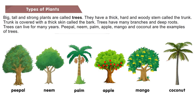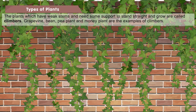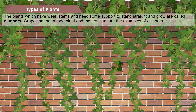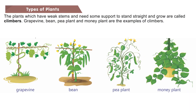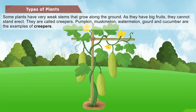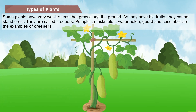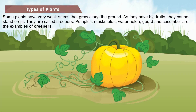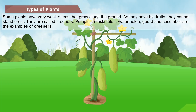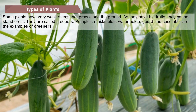Peepal, neem, palm, apple, mango and coconut are examples of trees. Plants which have weak stems and need some support to stand straight and grow are called climbers. Grapevine, bean, pea plant and money plant are examples of climbers. Some plants have very weak stems that grow along the ground; as they have big fruits, they cannot stand erect. They are called creepers. Pumpkin, muskmelon, watermelon, gourd and cucumber are examples of creepers.